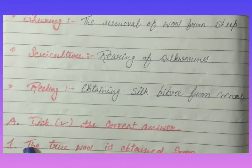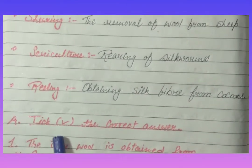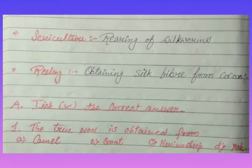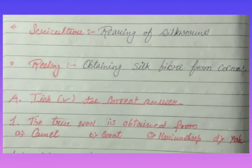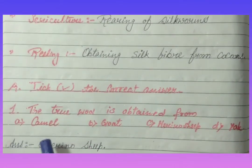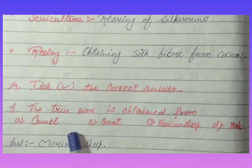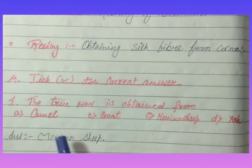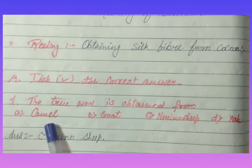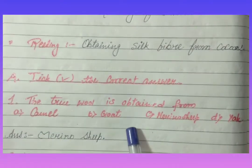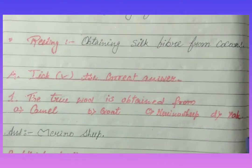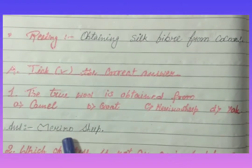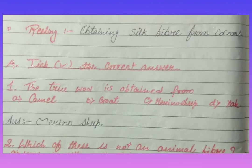Tick the correct answer. First question: true wool is obtained from camel, goat, Merino sheep, or yak. The correct answer is Merino sheep.